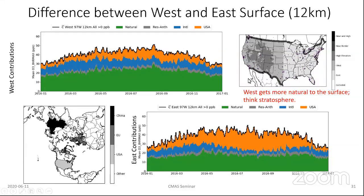One thing to point out: we're averaging over the entire West. The purple rings represent urban areas, and most of the West is not urban, whereas most of the East is urban. These are somewhat unfair comparisons between the two, because if we chose just an urban area — for example, the Colorado area — it would tend to look more like the Eastern average than the Western average. Nonetheless, these give a high-level picture of what's going on.